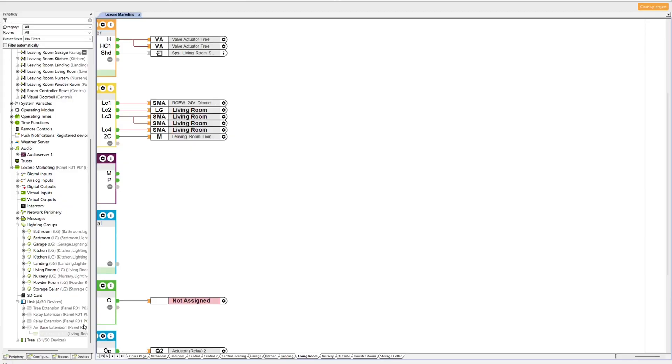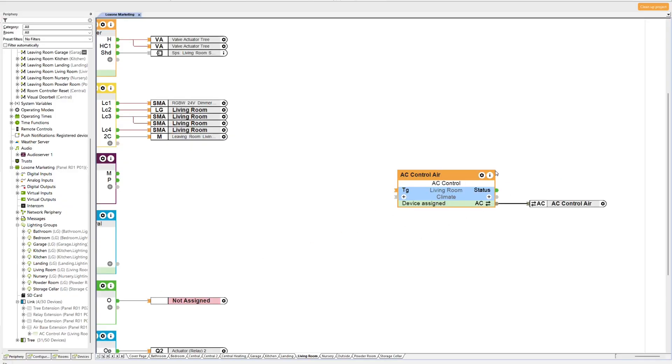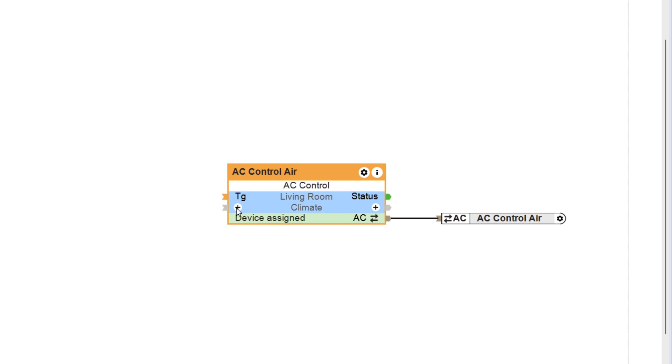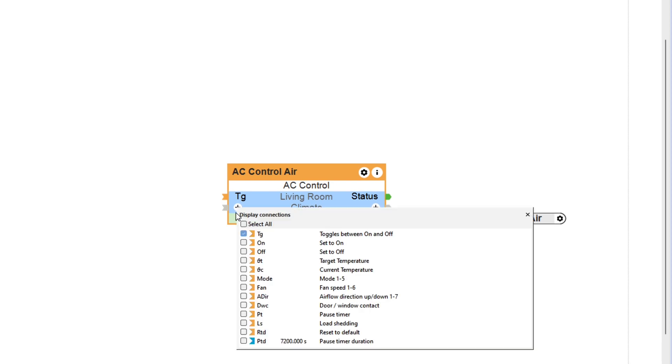As an innovation for the beta version, the AC Control Air has been given new inputs that enable the integration of door and window contacts, and a pause timer has been implemented that can be started via the app. This way, air conditioners can be put into sleep mode easily.